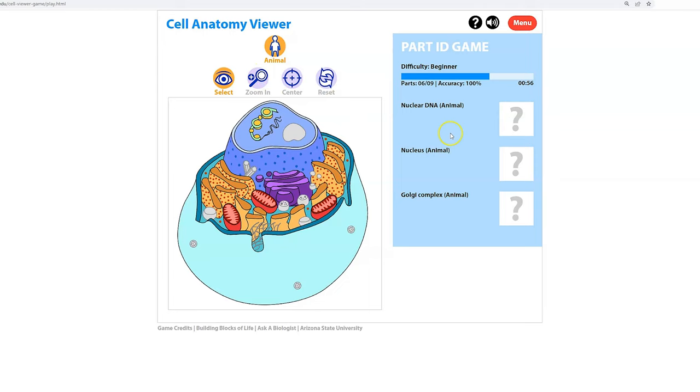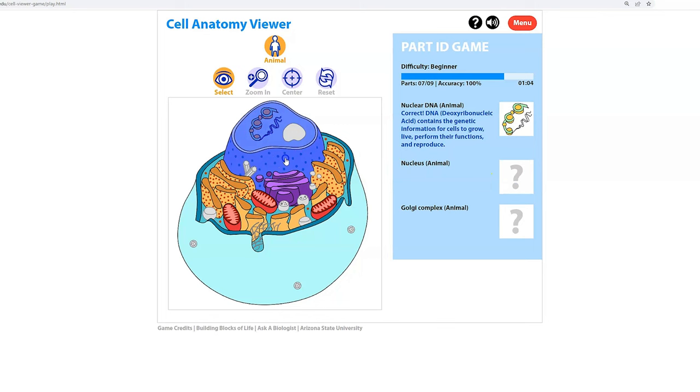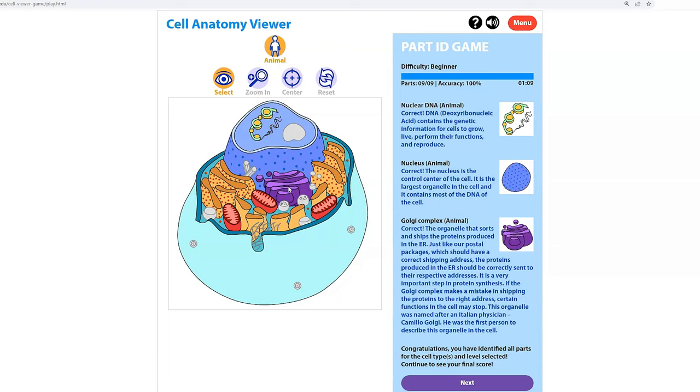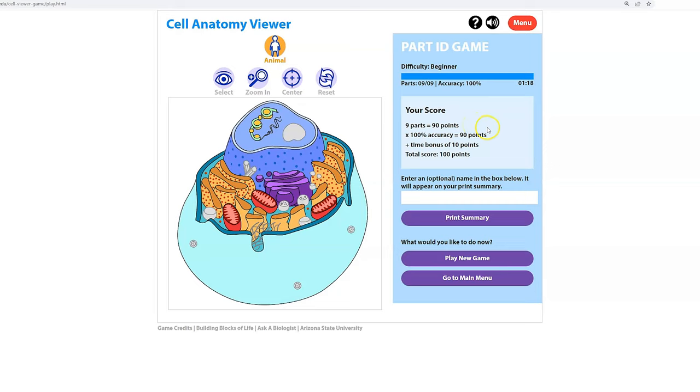I'm going to make sure I zoom out because I might miss an organelle. I'm looking for the nuclear DNA. That would be here. The nucleus. And the Golgi complex, one of my favorite organelles.